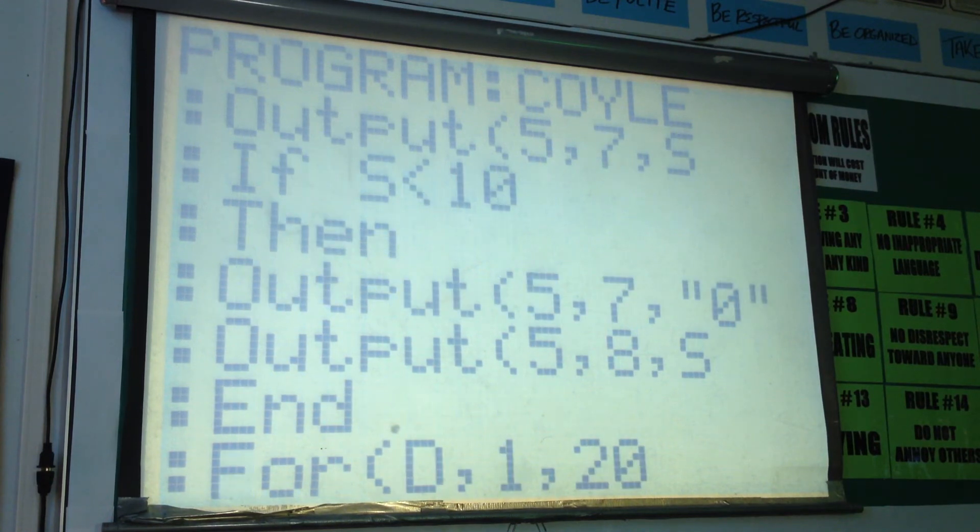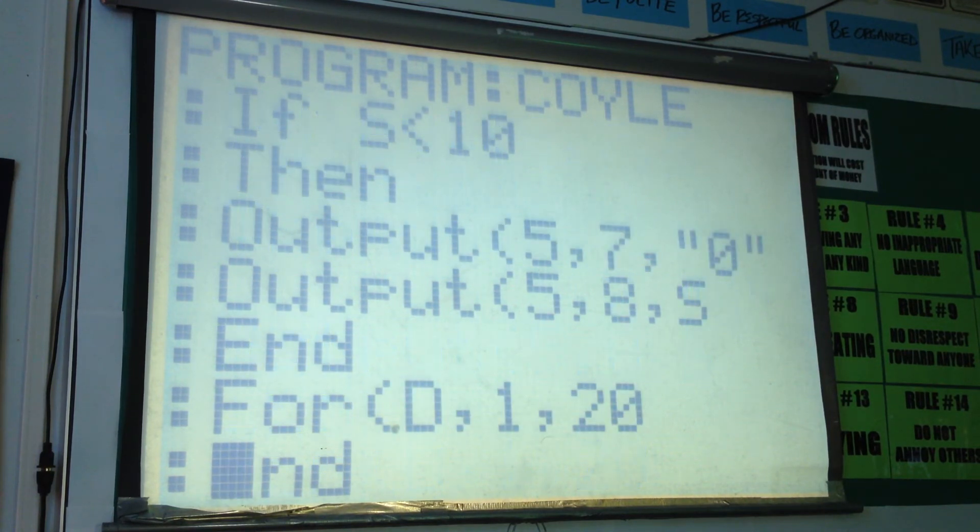And then output 58F, which is the actual second in a single digit between zero and 10, and then end that loop.